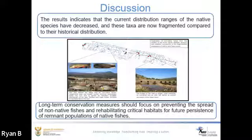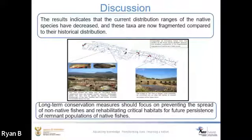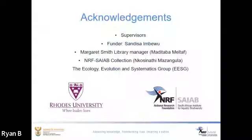It is clear from the distribution maps that over the years this system has been affected by the construction of weirs and the introduction of non-native species, resulting in the decrease of current distribution ranges of native species, which are now fragmented compared to their historical distribution. Therefore, long-term conservation measures should focus on preventing the spread of non-native fishes and rehabilitating critical habitat for future persistence of the remnant populations of native fishes.